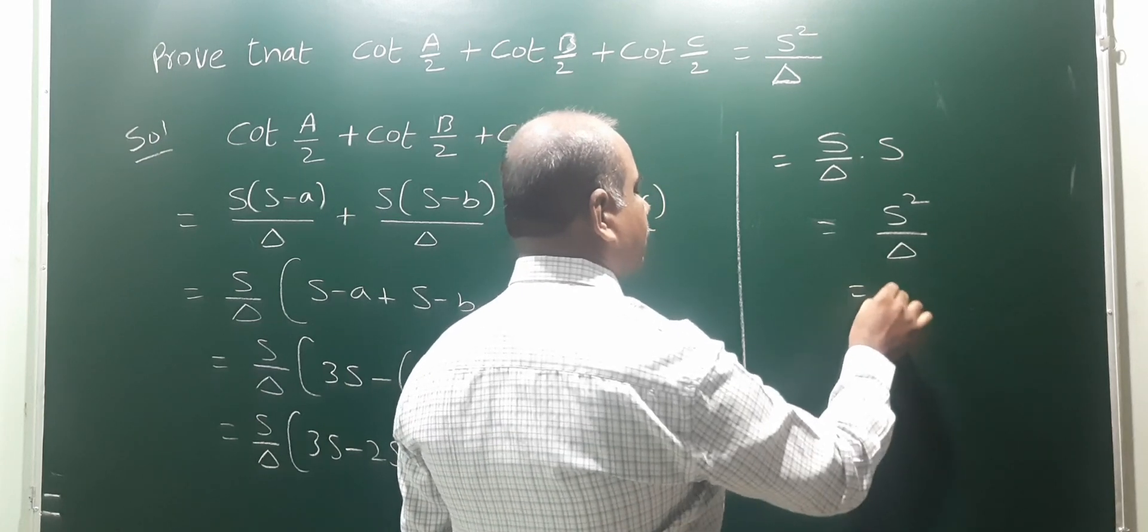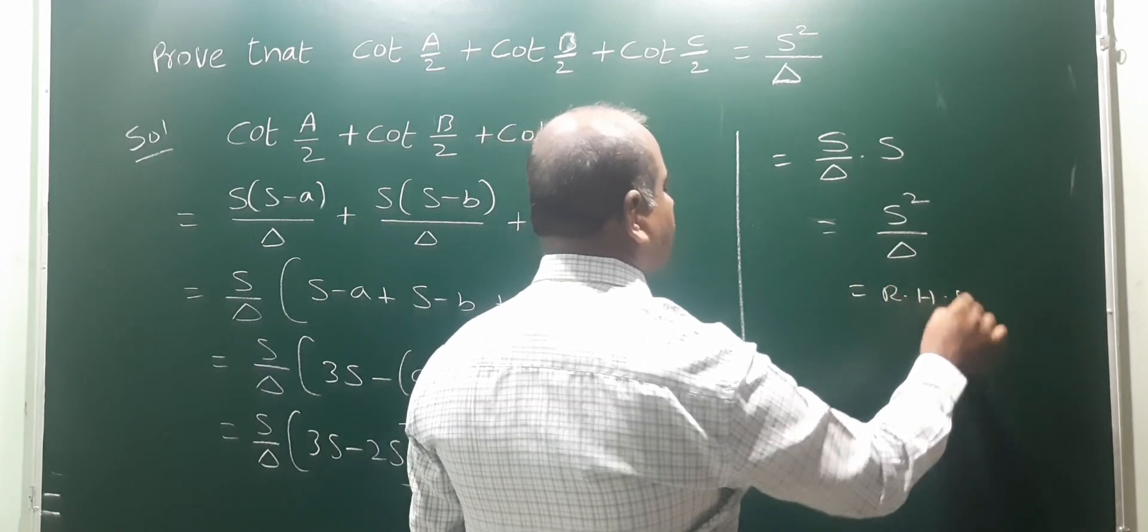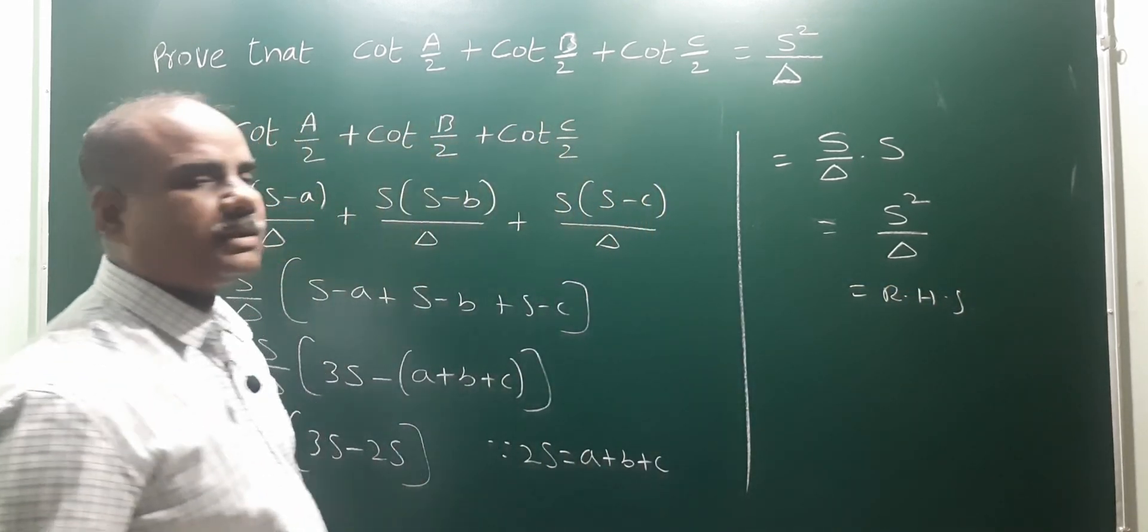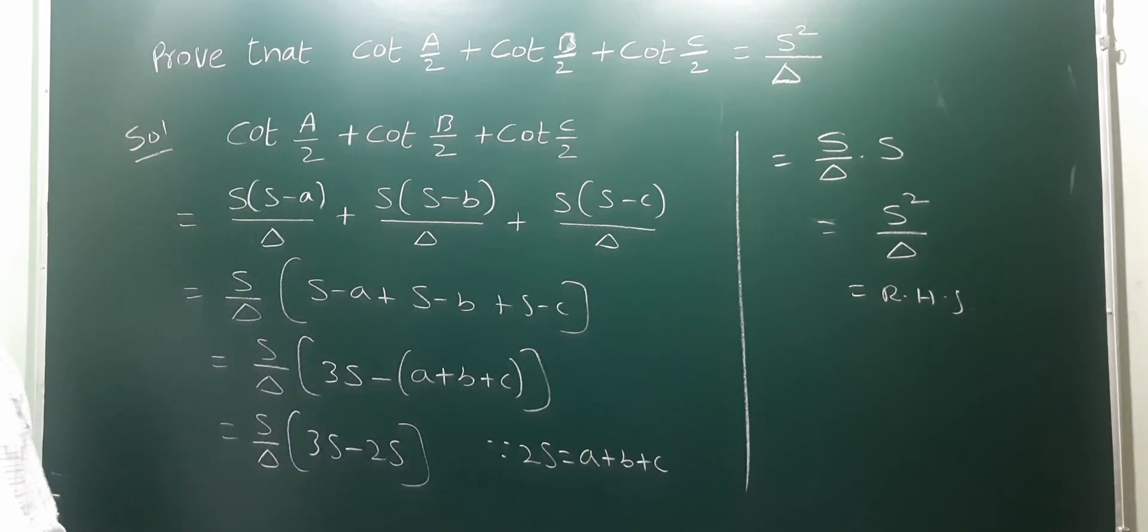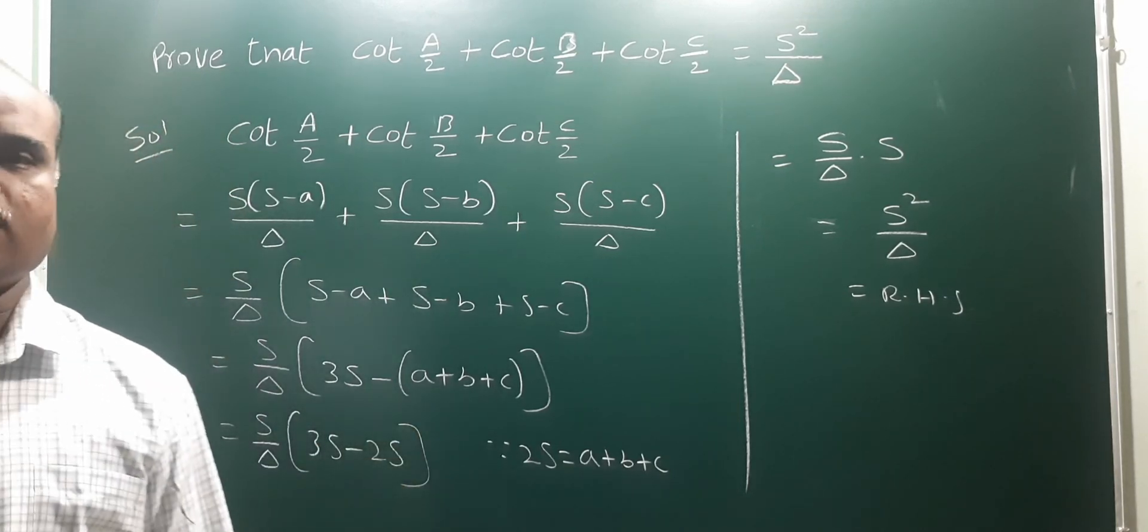Which is the RHS. Therefore, cot A/2 + cot B/2 + cot C/2 equals s²/Δ.